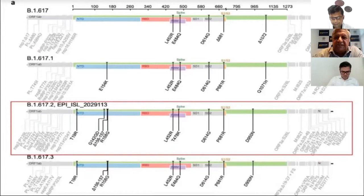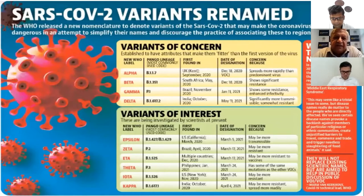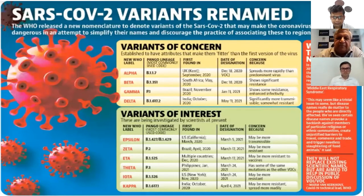Multiple accumulating mutations are making the spike protein enable the virus to spread even in vaccinated persons. To prevent labeling mutants by country or region — the N501Y (UK), South African, Brazil, and Indian variants — WHO has decided to name them alpha, beta, gamma, delta, etc. We should use these terminologies rather than country or region names, just as we use COVID rather than Wuhan virus.